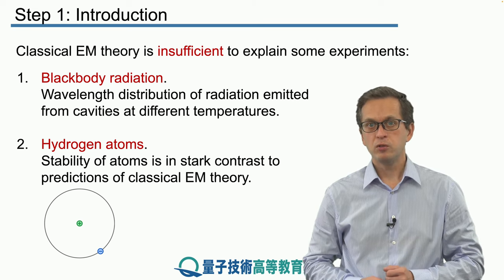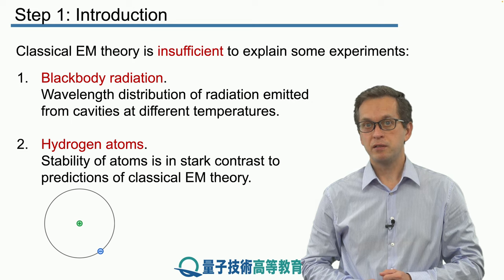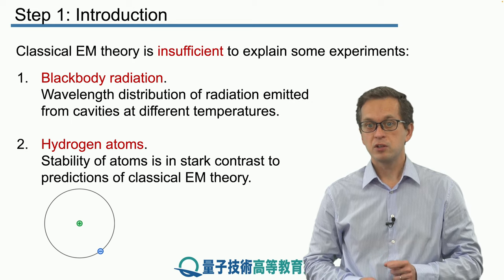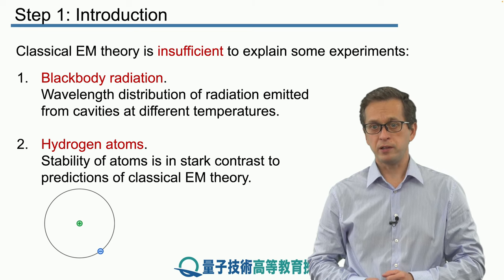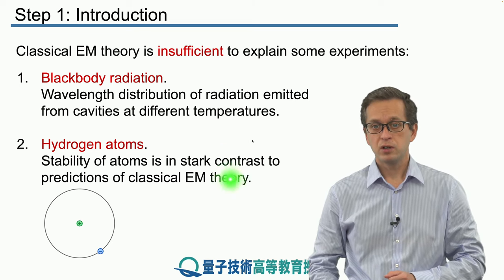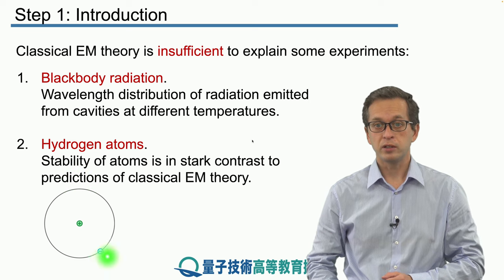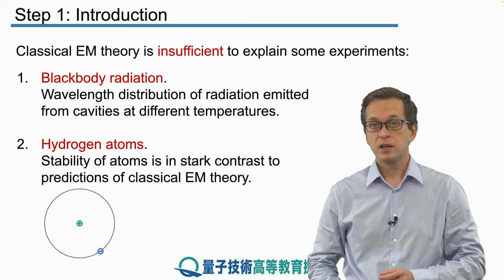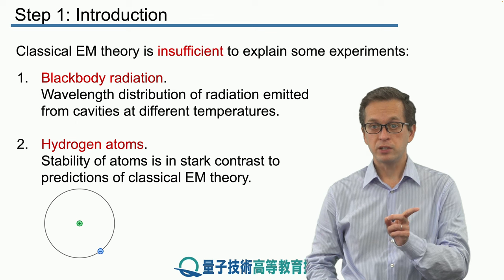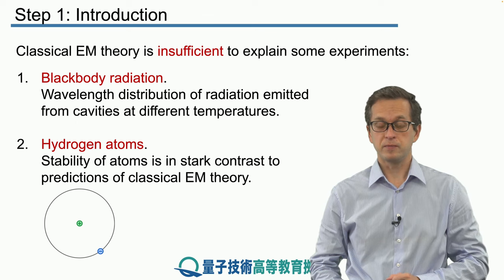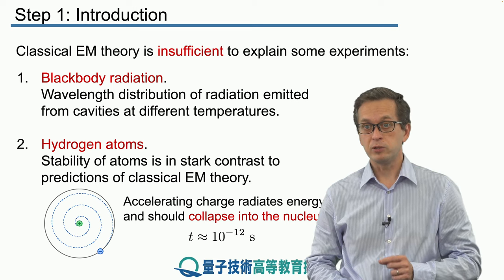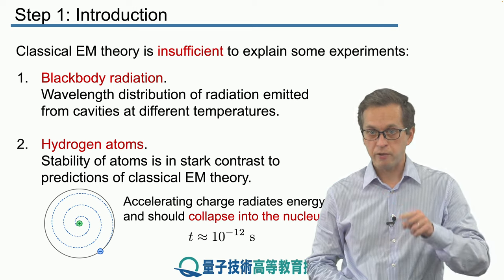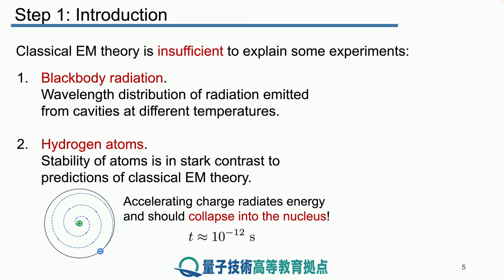But we already know from classical electromagnetic theory that accelerating charges should radiate energy in the form of electromagnetic waves. And even though this electron was predicted to orbit the nucleus at a constant speed, because it was changing direction, this constitutes acceleration. So the theory was predicting that such an electron should be losing energy and it should spiral inside the nucleus.